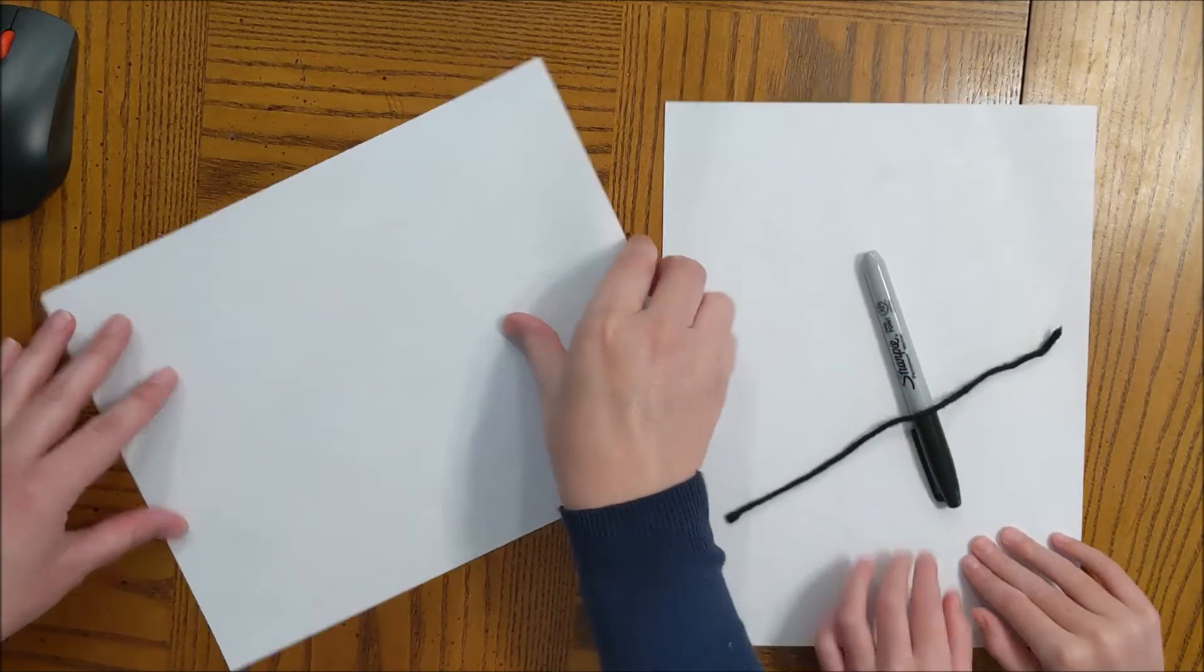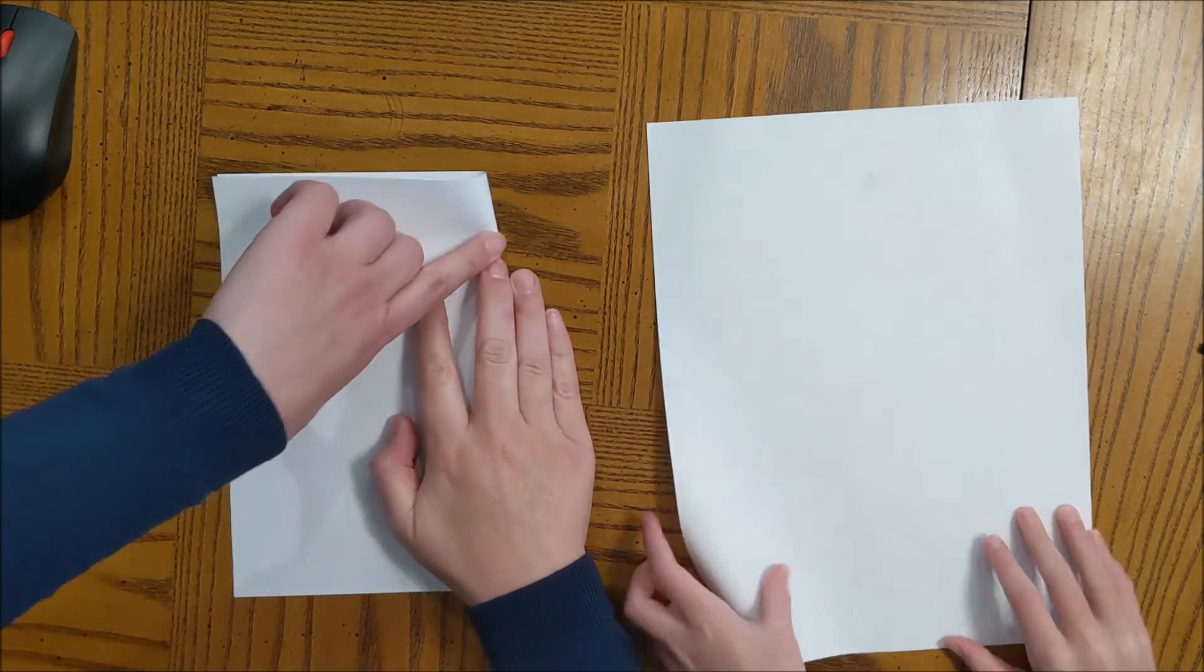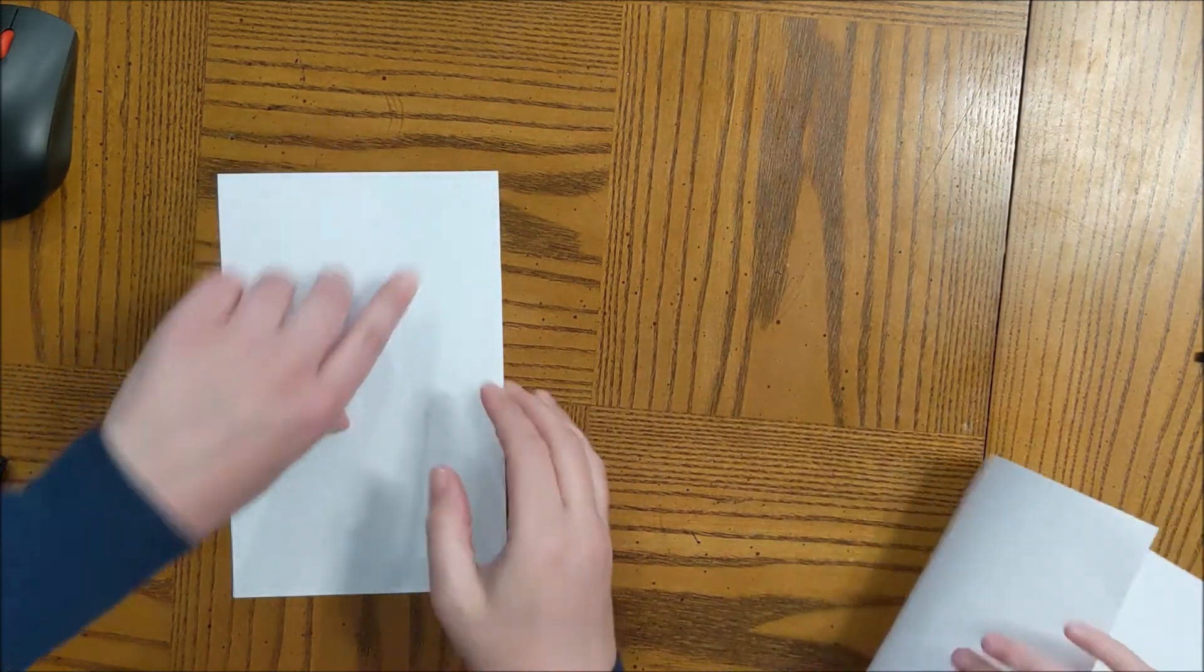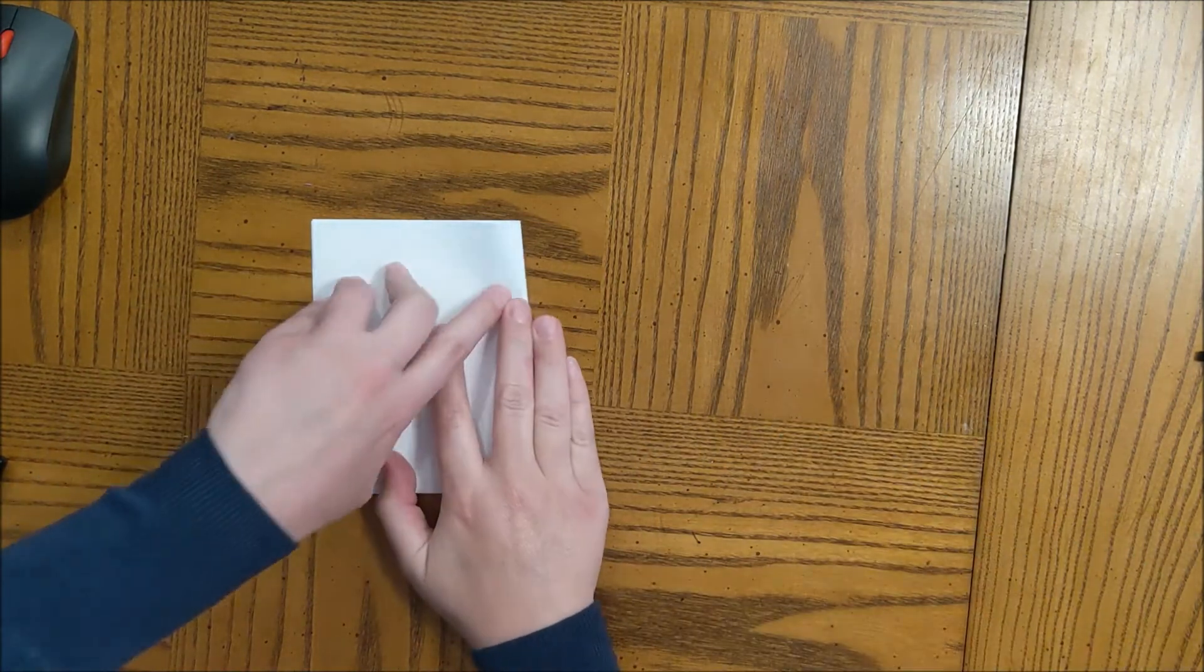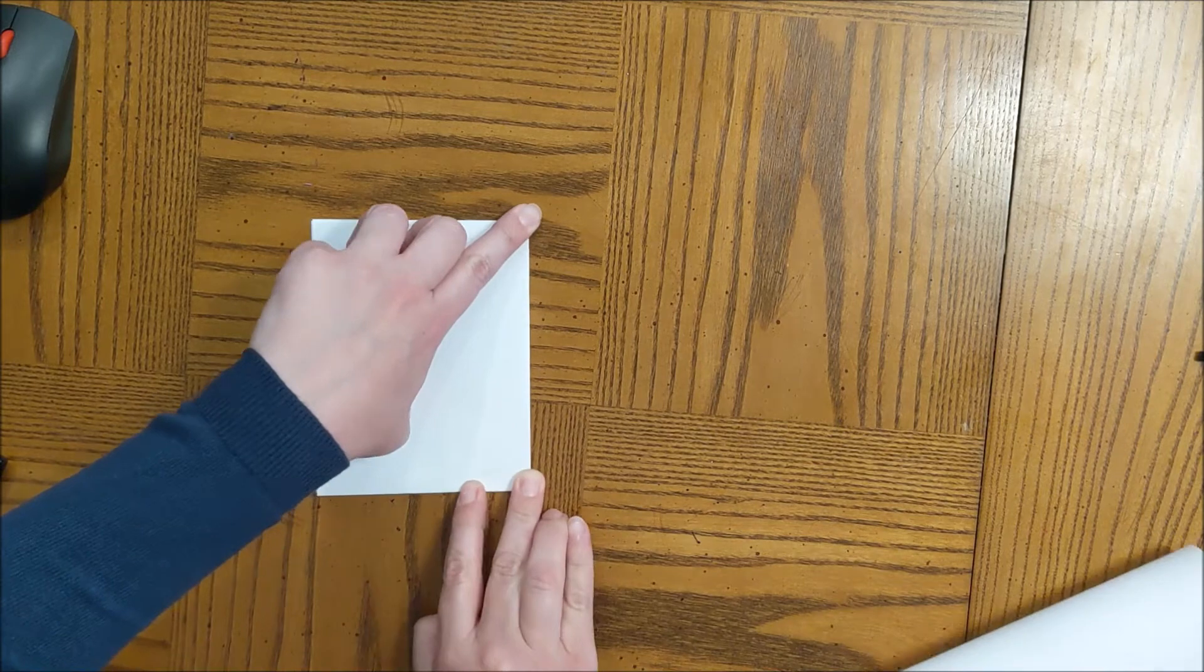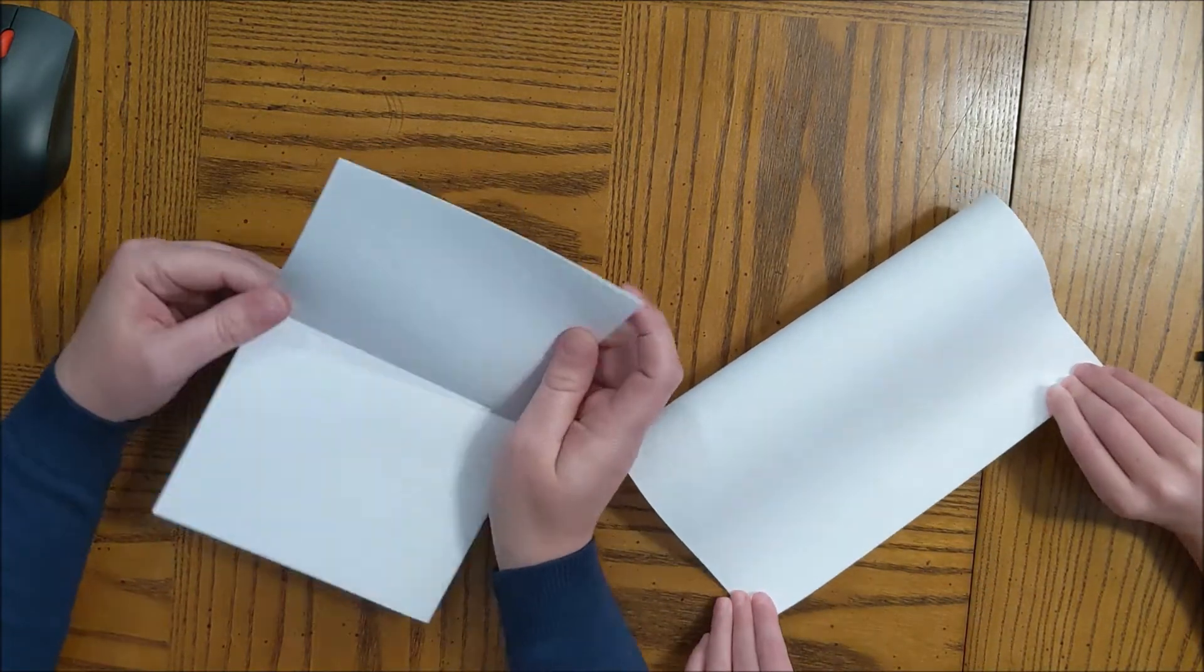Okay, so the first thing Clara and I are going to do is we're going to fold our paper so we can play multiple rounds of the game. So we're just going to fold it and fold it back again. We could fold it for however many times you want to play. We're going to do four of those.